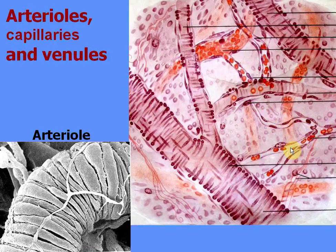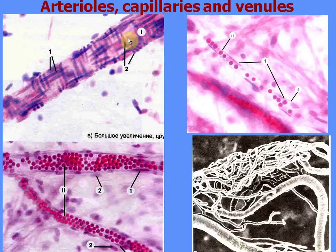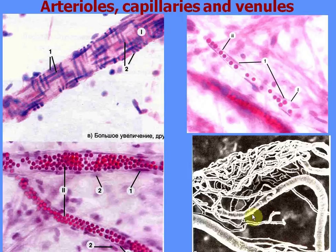Sometimes blood capillaries may have such a small lumen that even one erythrocyte cannot go through — only blood plasma. These are like reserve capillaries. This picture demonstrates arterioles, small veins, and a blood capillary, as well as microvessels under scanning electron microscopy — showing the arteriole network, blood capillaries, and veins.